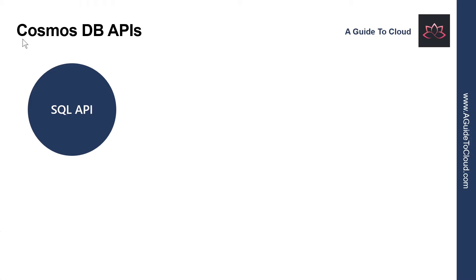So what are Cosmos DB APIs? You can access the data in a Cosmos DB database through a set of commands and operations, collectively known as APIs or Application Programming Interface. Cosmos DB provides its own native API called SQL API. This API provides a SQL-like query language over documents that enables you to retrieve documents using select statements.